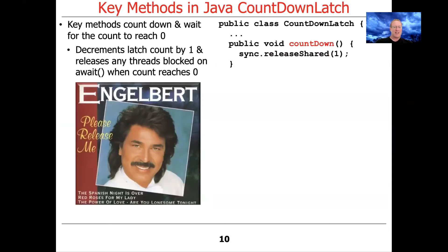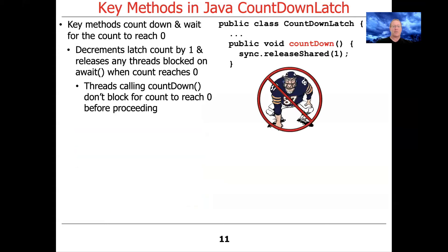The Countdown method atomically decrements the count by one. When the count reaches zero, it releases any threads blocked on the Await method — essentially a broadcast informing all waiters they can make forward progress. Threads that call Countdown don't block; they just decrement the count by one and proceed. In many ways, this is like releasing a semaphore, where releasing doesn't block but acquiring does.